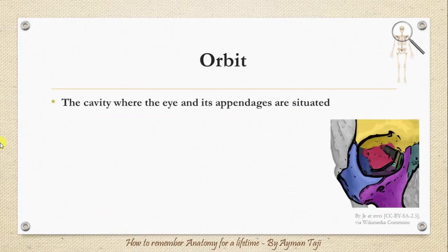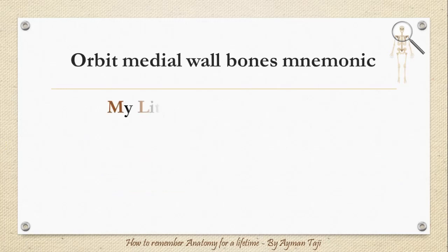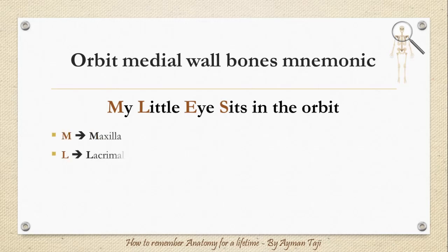Finally, the orbit is the cavity where the eye and its appendages are situated. The maxillary bone, lacrimal bone, ethmoid bone, along with a small part of the body of the sphenoid bone, form the medial wall of the orbital canal, which is the thinnest wall of the orbit. To remember these bones, use the mnemonic: 'My little eye sits in the orbit' — Maxilla, Lacrimal, Ethmoid, and a part of the Sphenoid bone.